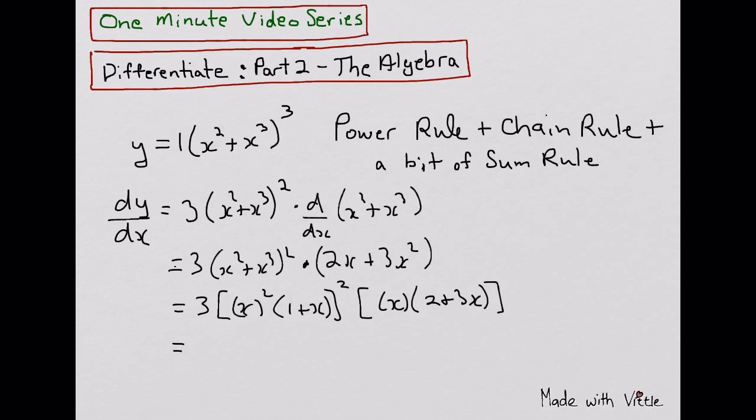Using power of a power I can take the x squared out of this, so that would be 3x to the 4th, 1 plus x squared, and then I would have an x there, and a 2 plus 3x.